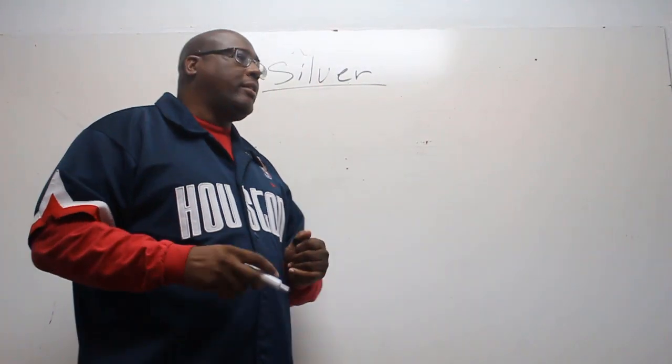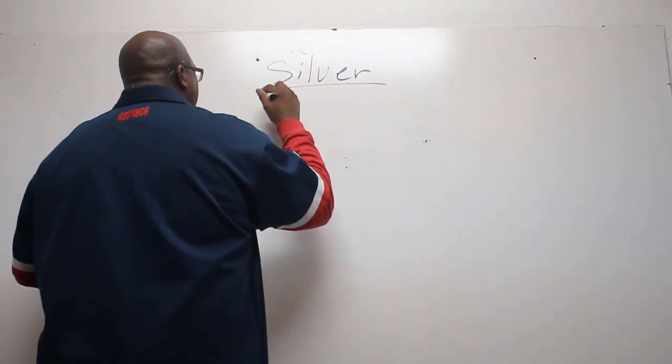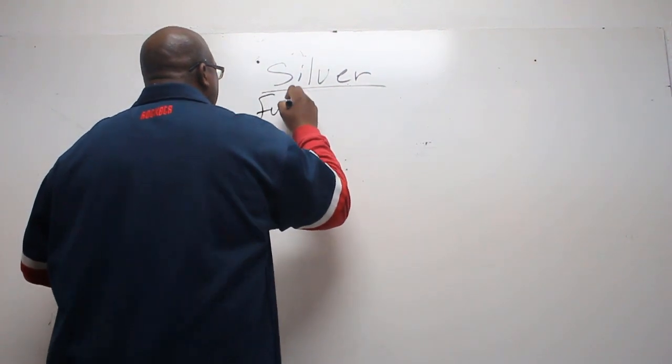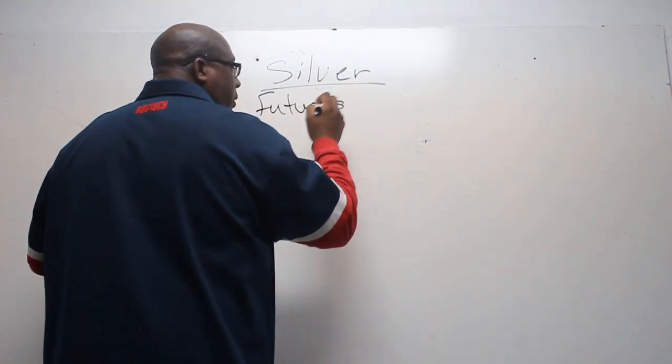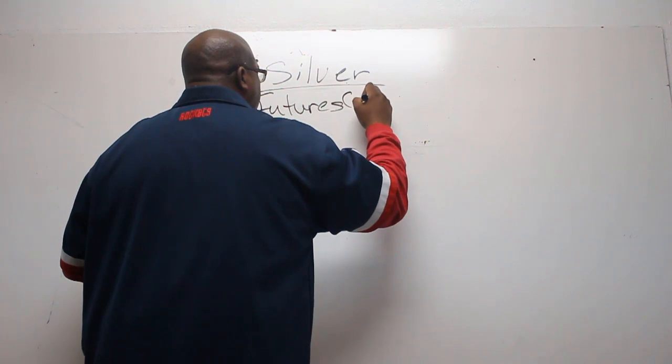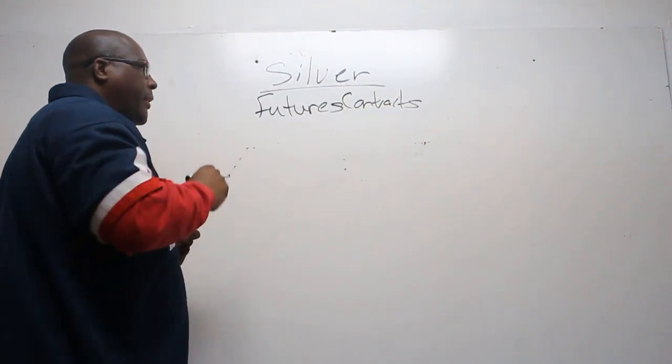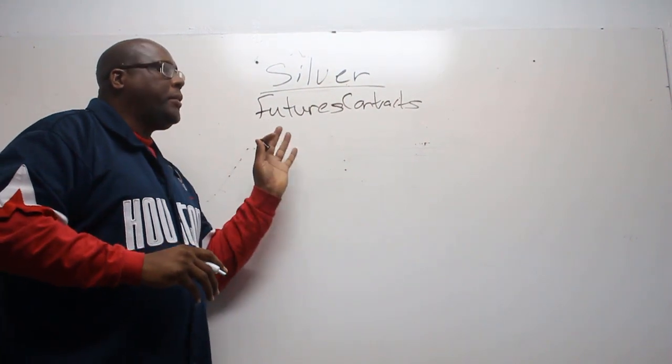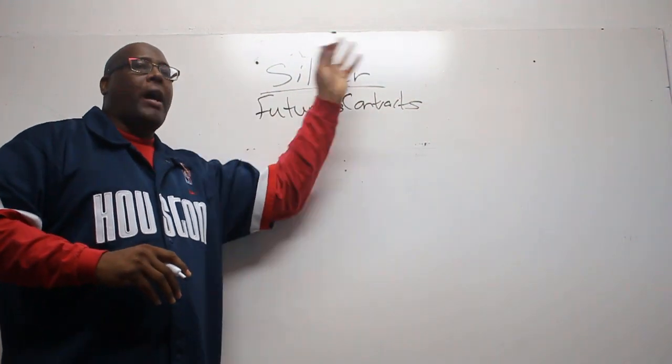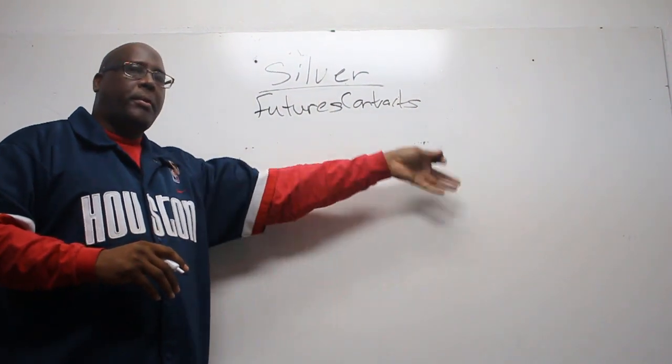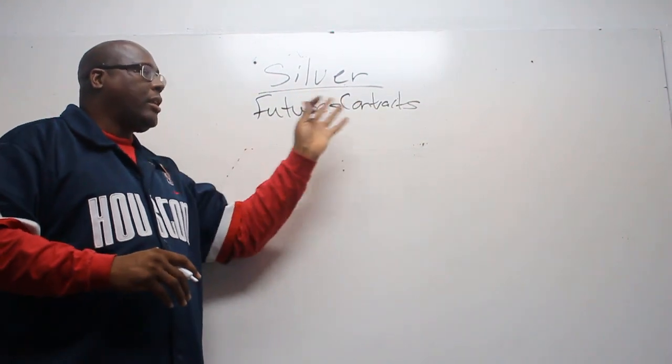There's three ways to buy silver. You have futures contracts. All that means is that you are trying to predict what the spot price of silver is going to be in the future.